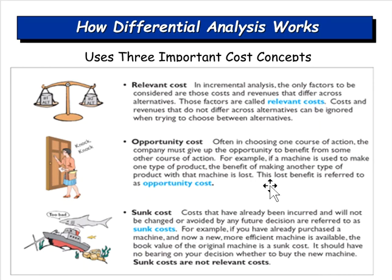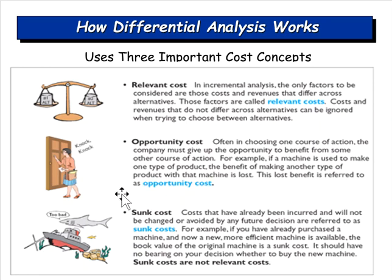Opportunity cost is what you give up when you select one course of action. For example, if a machine is used to make one type of product, the benefit of making another type of product with that machine is lost. I like to ask students: what are you giving up to be here this evening? They say things like watching TV, spending time with family, sleeping, working, making money. You always have an opportunity cost for every alternative you take.